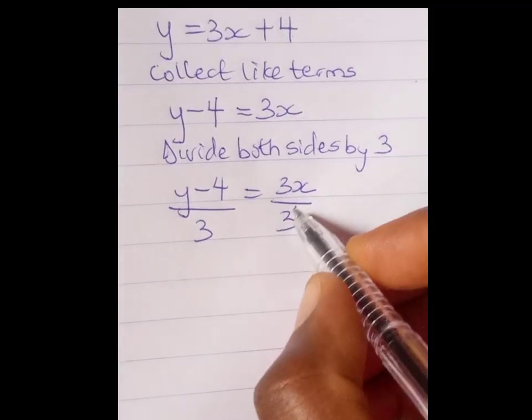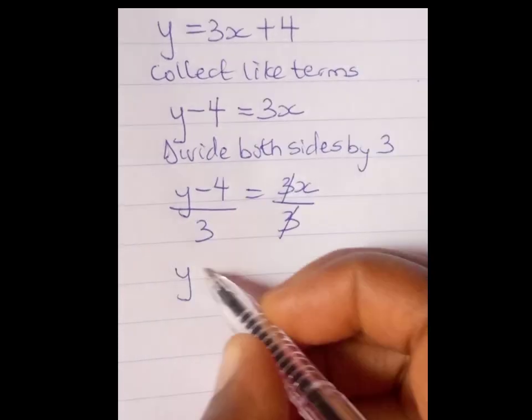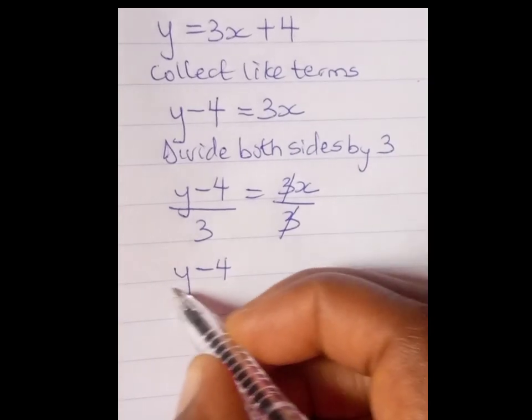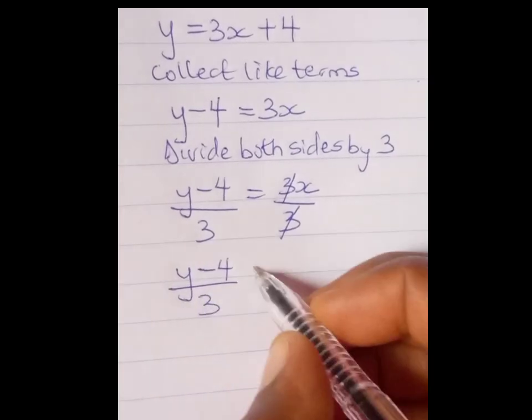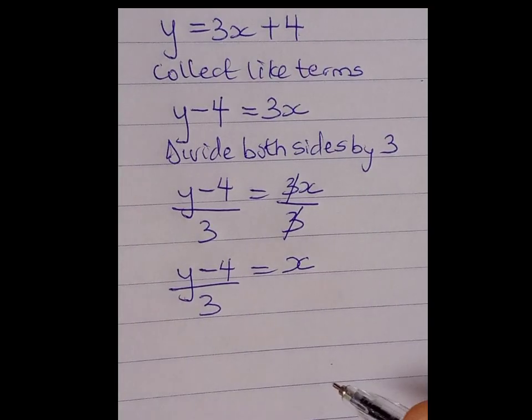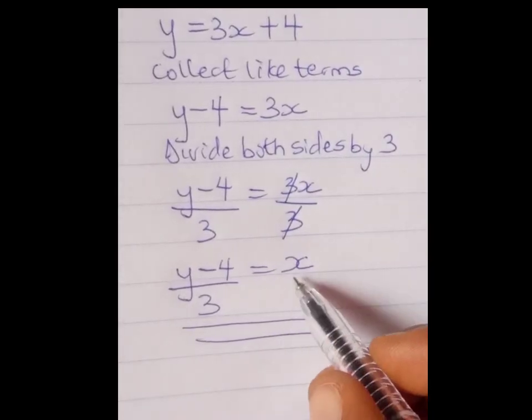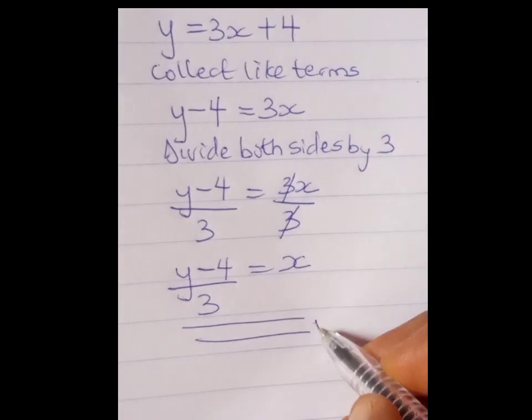Now, 3 crosses 3. Then, we have y minus 4 divided by 3 equals x. So, our final answer is this. We've made x the subject of the formula.